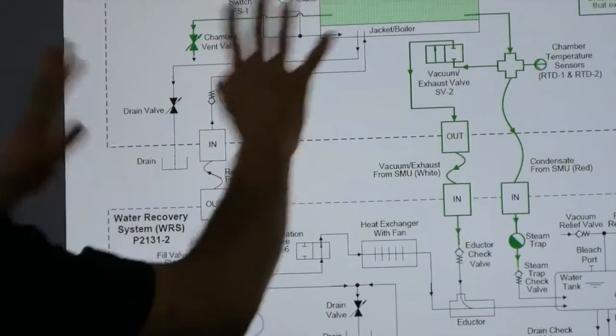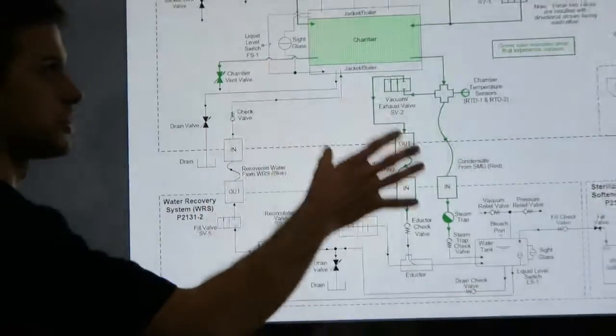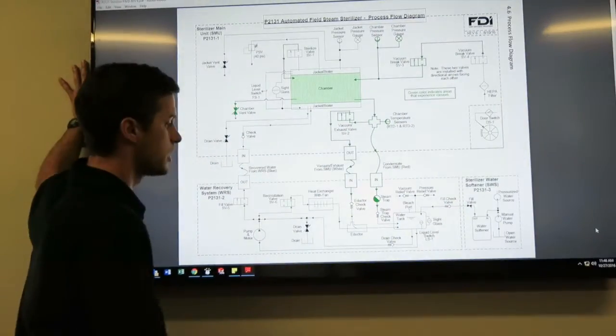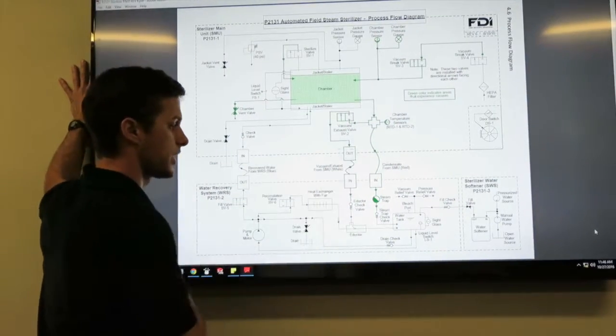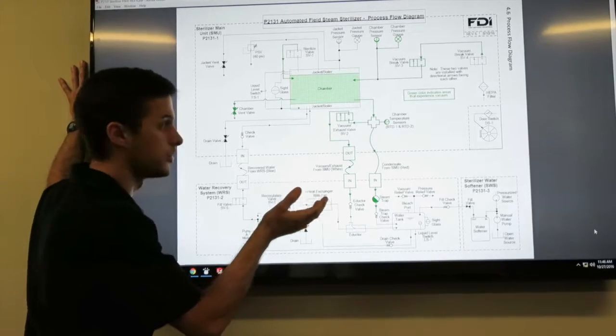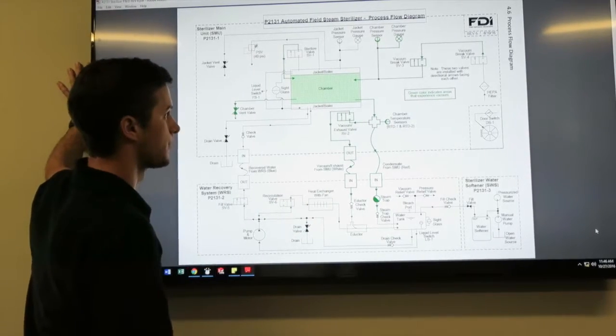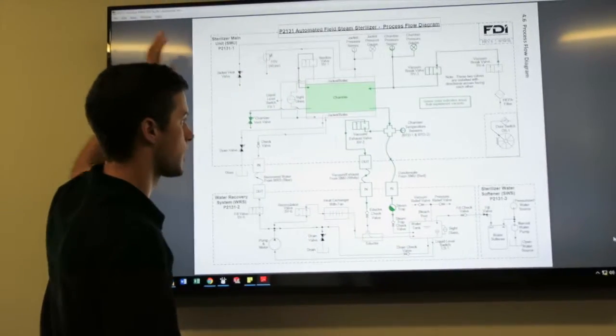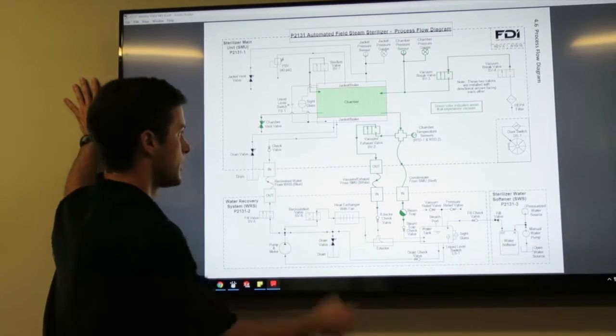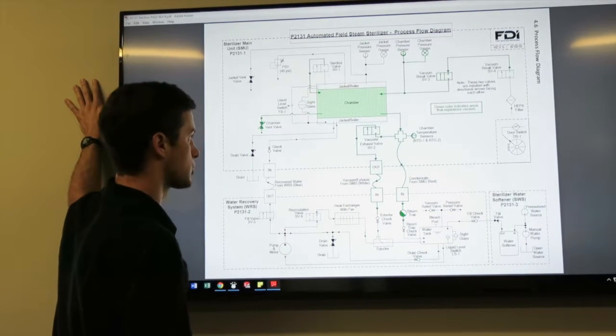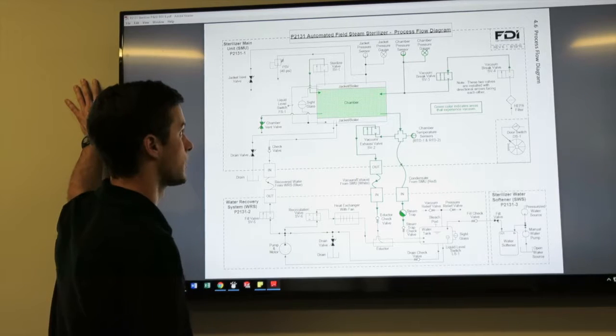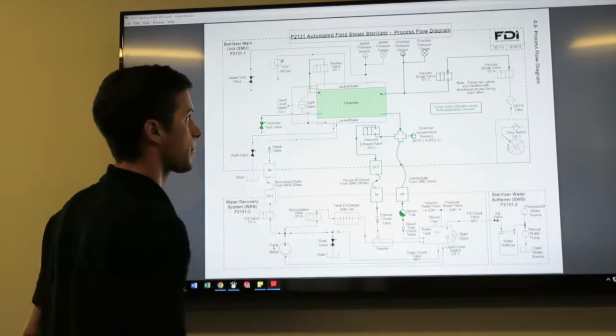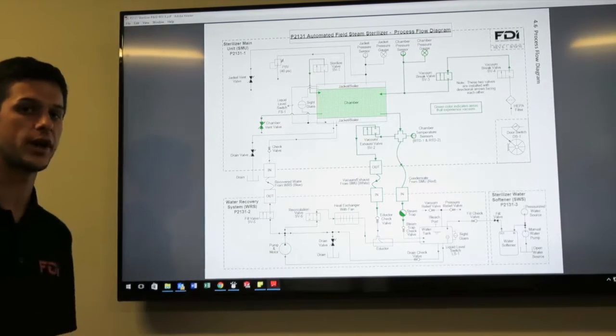So if we kind of zoom out, this is an example of how to use the process flow diagram. You could use it to troubleshoot some other things. If you weren't getting steam to the chamber, you could figure out where does the steam come from, why is it not getting there? If maybe your liquid level switch wasn't working, you can see where it's attached. So that's how to use the process flow diagram.